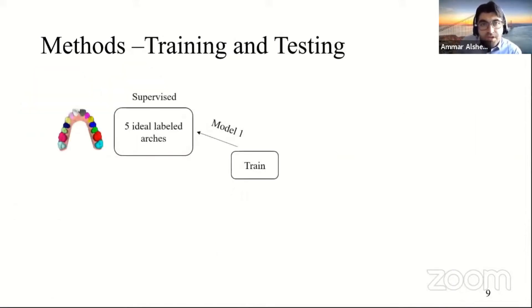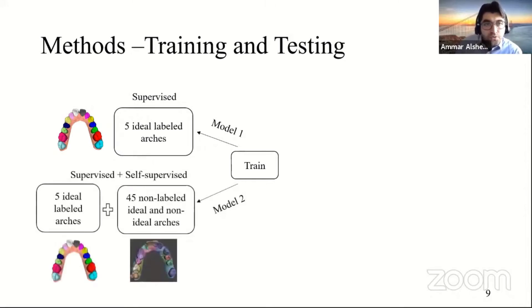So in this talk, I will be presenting two models. The first model is a model trained on five labeled arches in a purely supervised manner. And here, by ideal, I mean arches that do not contain missing teeth or irregular teeth or preparations. And model two will be trained on the same five labeled arches, but we will add additional non-labeled data and leverage self-supervised training on this data to add to our loss.